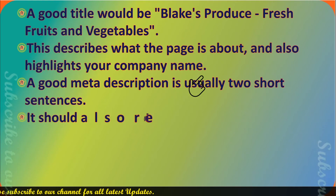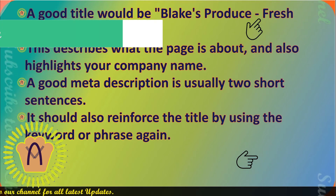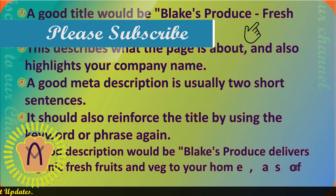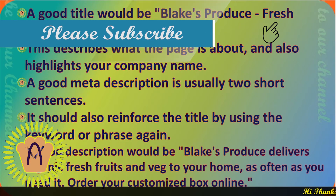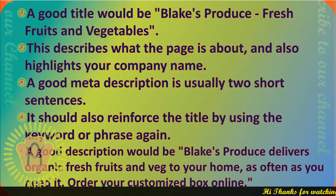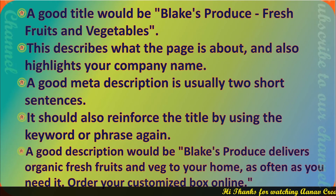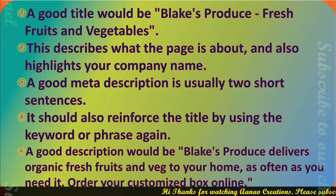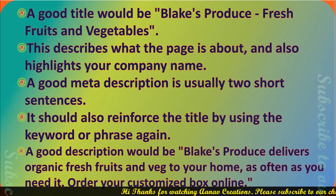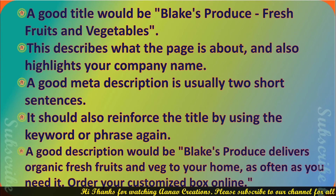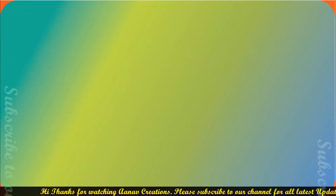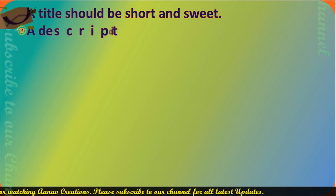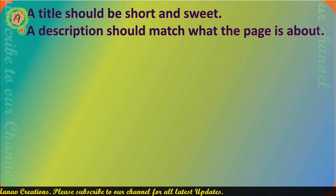A good meta description is usually two short sentences. It should reinforce the title by using the keyword or phrase again. A good description would be: 'Blake's Produce delivers organic fresh fruits and veg to your home, as often as you need it. Order your customized box online.' So remember: a title should be short and sweet, and a description should match what the page is all about.